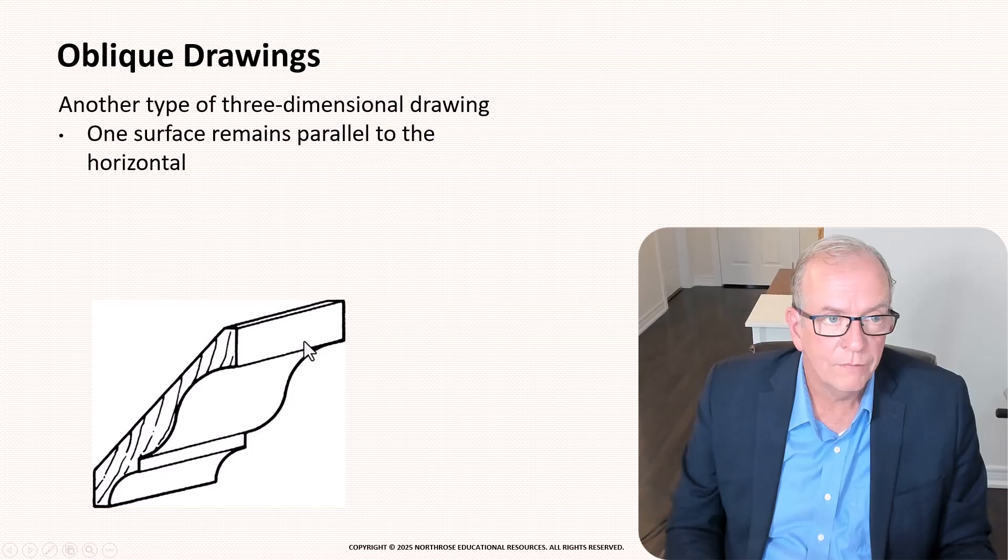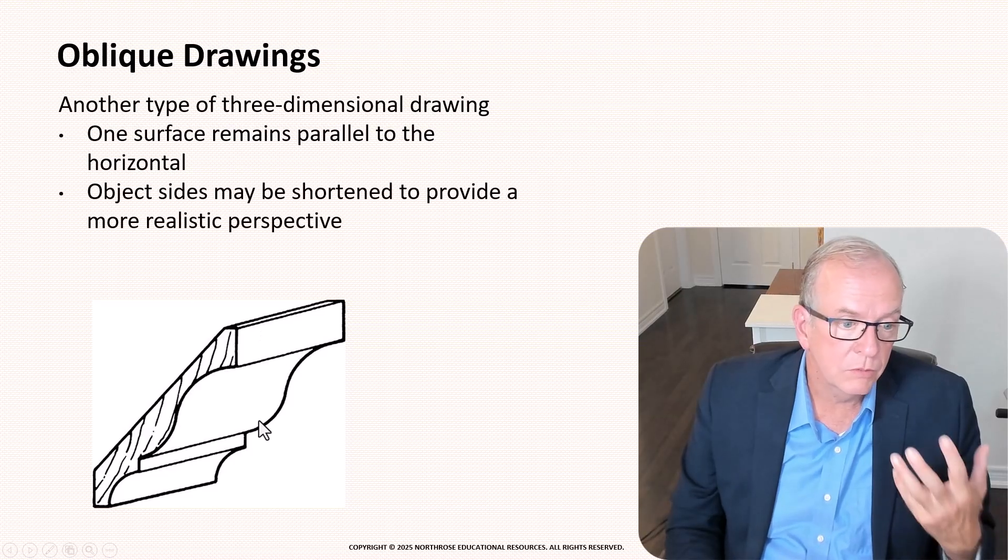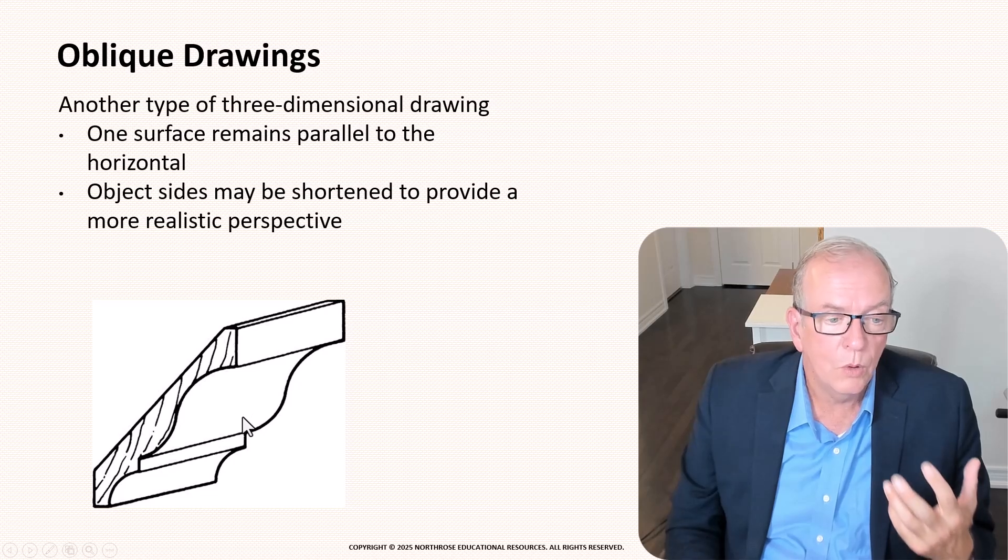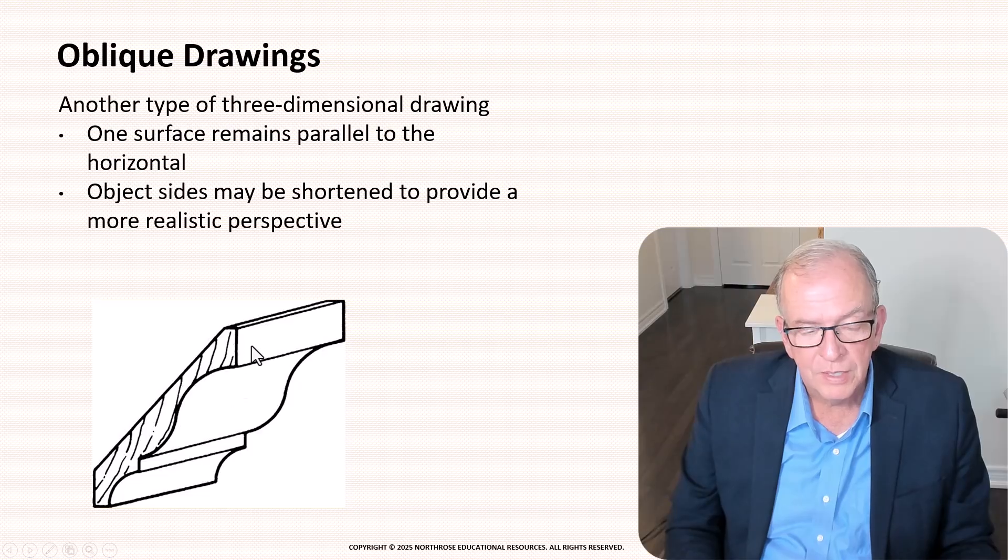and usually oblique drawings they go off at about a 45 degree angle and it gives a real good view of what this looks like. Like if I just look at the end without looking at this part I'm not sure everybody knows this would be a crown molding.